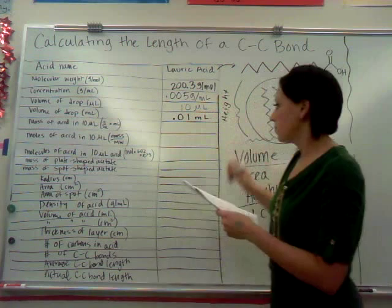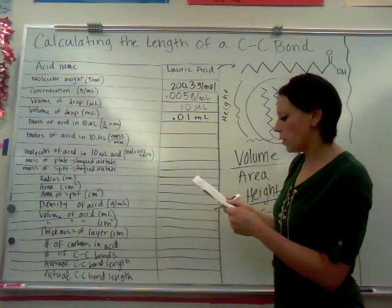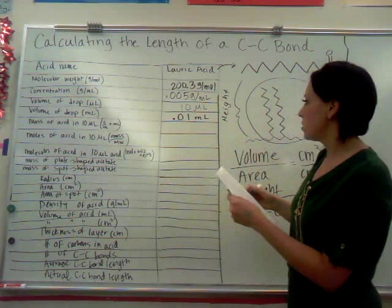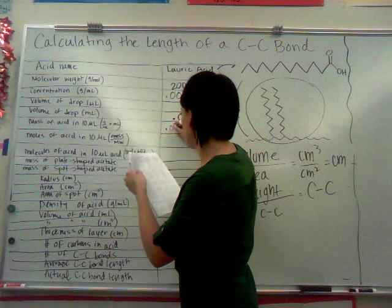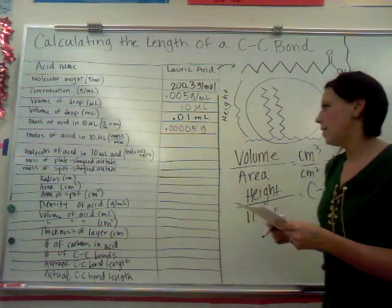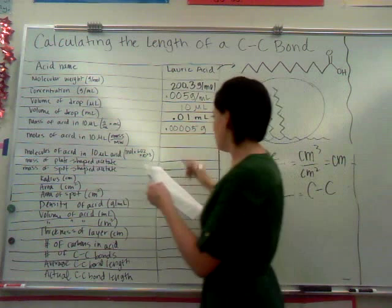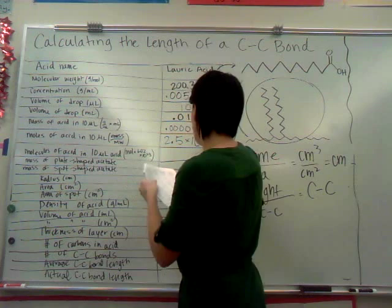So if we want to know the mass of the acid, we can do a simple calculation of taking the concentration times the volume, 0.005 grams per milliliter times 0.01 milliliters. We're talking 0.00005 grams of acid that we're adding. How many moles is that? Take your mass divided by your molecular weight, back to your chemistry days, 2.5 times 10 to the minus 7th moles.